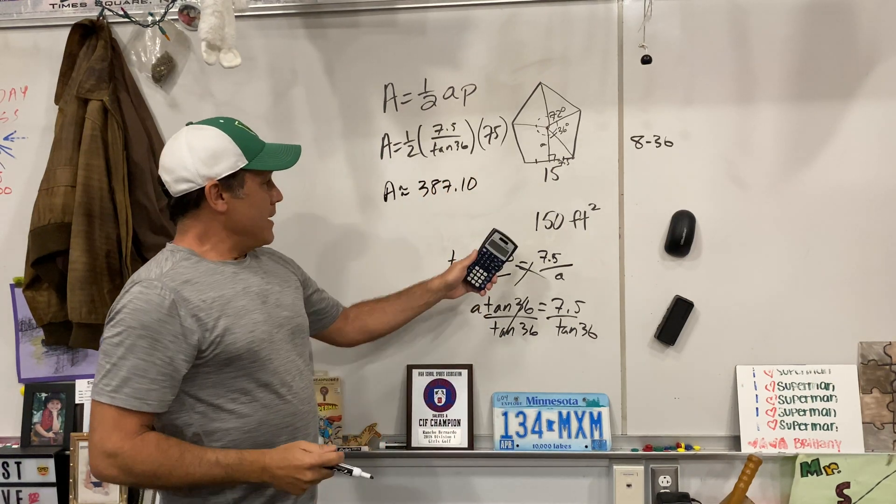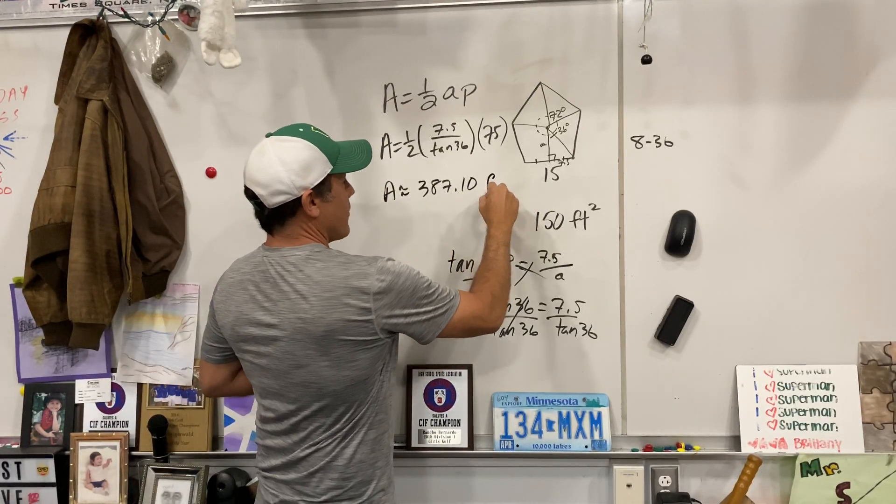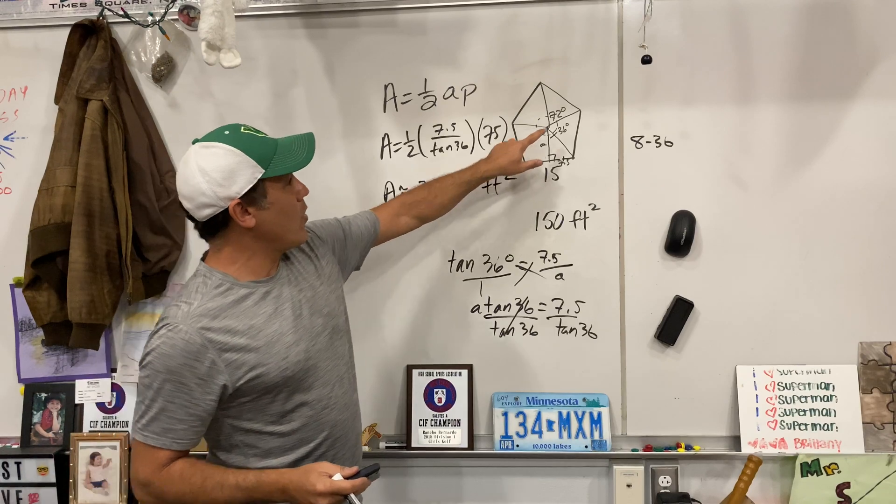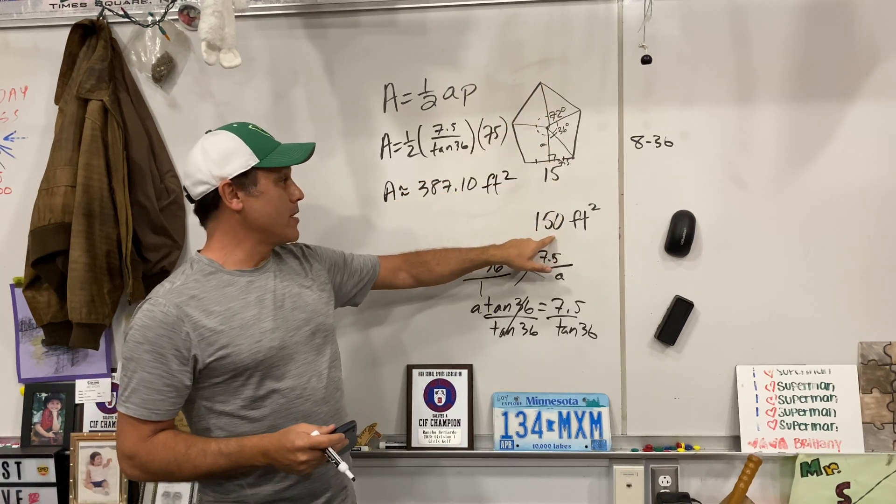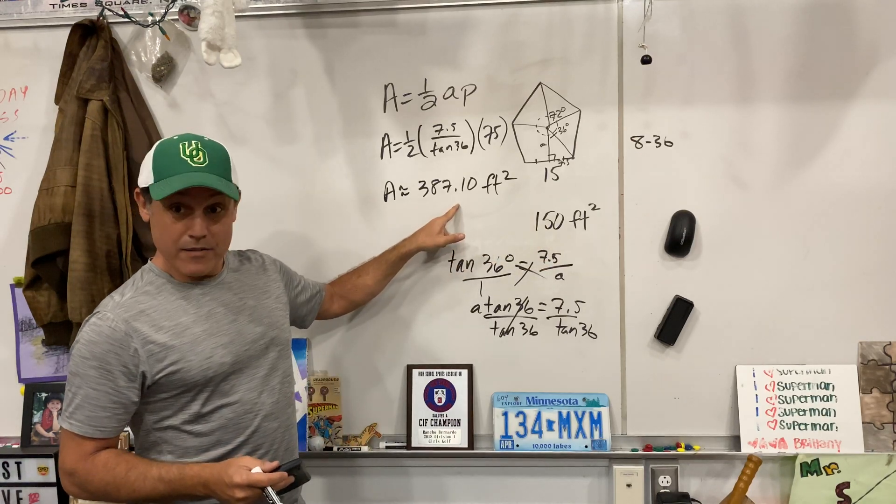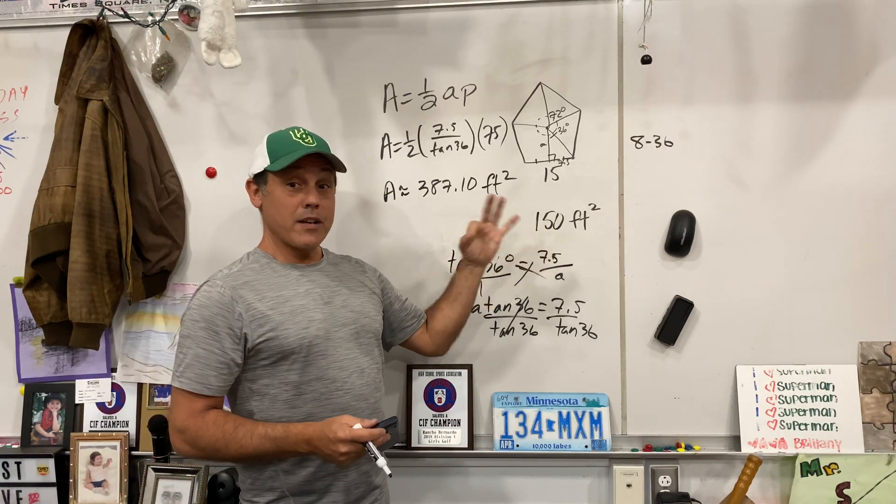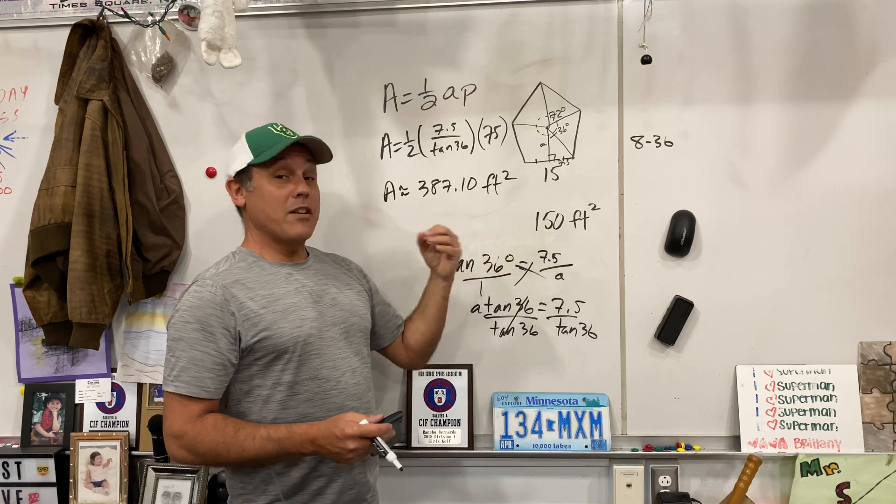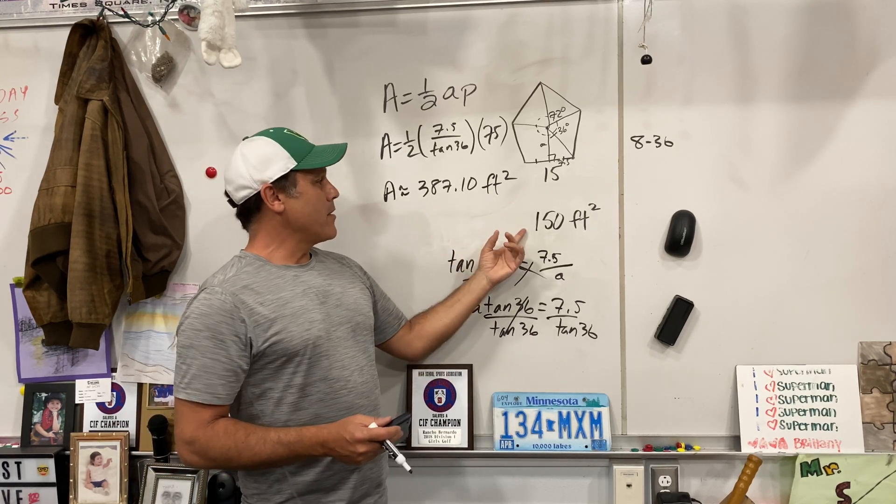So the area is about 387.1 feet squared. Well, that's the whole area for this. If each bag at Home Depot is 150 square feet, is one bag going to fill it up? No. Two bags, that's 300, right? That's not going to do it. So we're going to need a third bag. Now, by the way, is the third bag going to be too much? Yes, it's going to be 450.